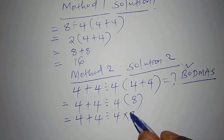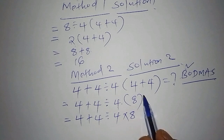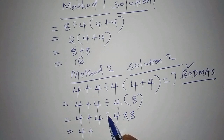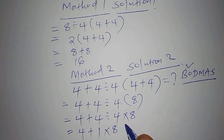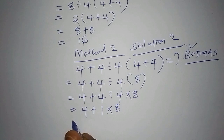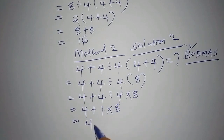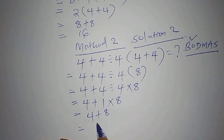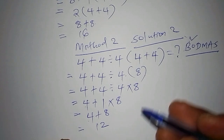We multiply with the number inside the bracket, which is eight. So we have four plus four divided by four, which is one, multiplied by eight. That gives us one times eight equals eight. So we have four plus eight, which equals 12. Our answer here is 12.